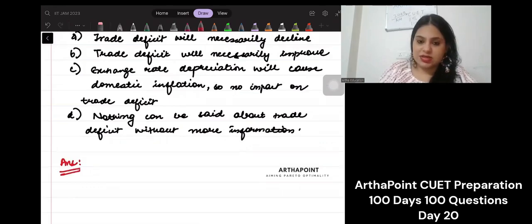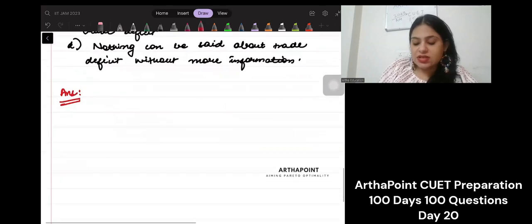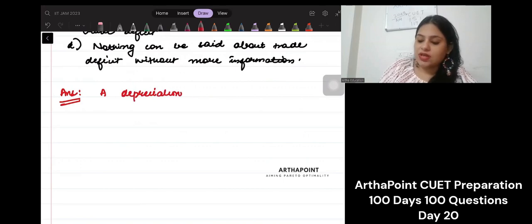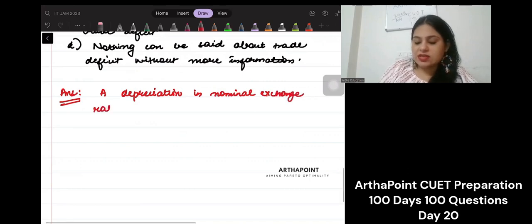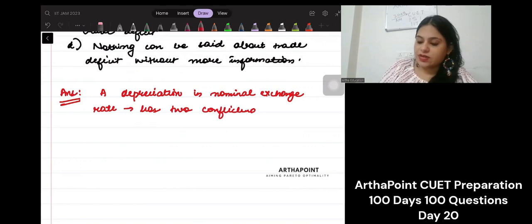So basically, see when, let's write this down. Whenever there is depreciation in nominal exchange rate, it has two conflicting effects.